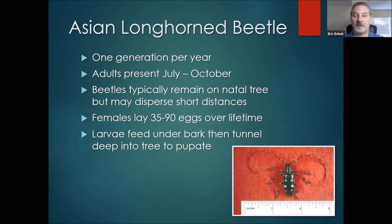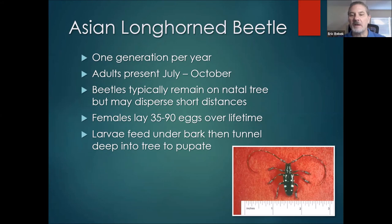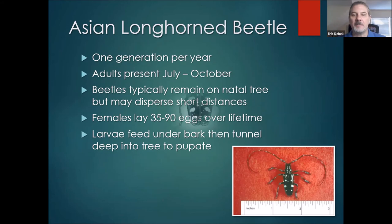The larvae feed under bark for a little while, much like emerald ash borer, but with Asian longhorn beetle, the larvae — what we call round-headed borers — tunnel deep into the tree, down into the heartwood, and that's where they pupate. The adults belong to the family Cerambycidae — the longhorn beetles — named because they have really long antennae relative to the length of their body. Males in particular have extremely long antennae. The females are much larger as they're carrying the eggs. They also get the nickname 'the starry night beetle' — think Van Gogh's famous painting — because the pattern of coloration on their elytra, the wing covers, is reminiscent of the painting.